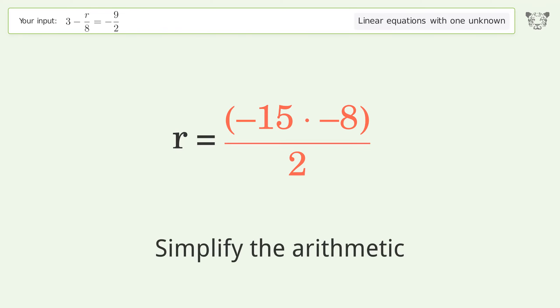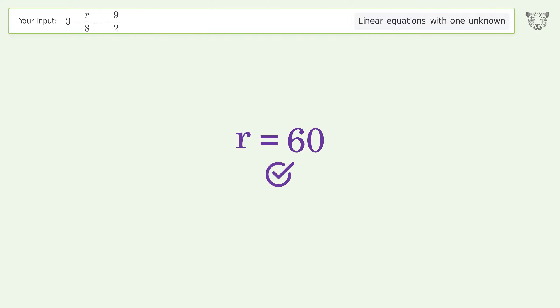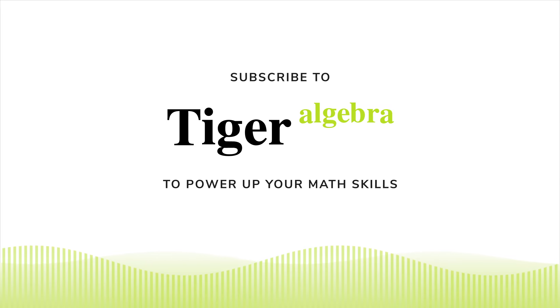Multiply the fractions. Simplify the arithmetic. And so the final result is r equals 60.